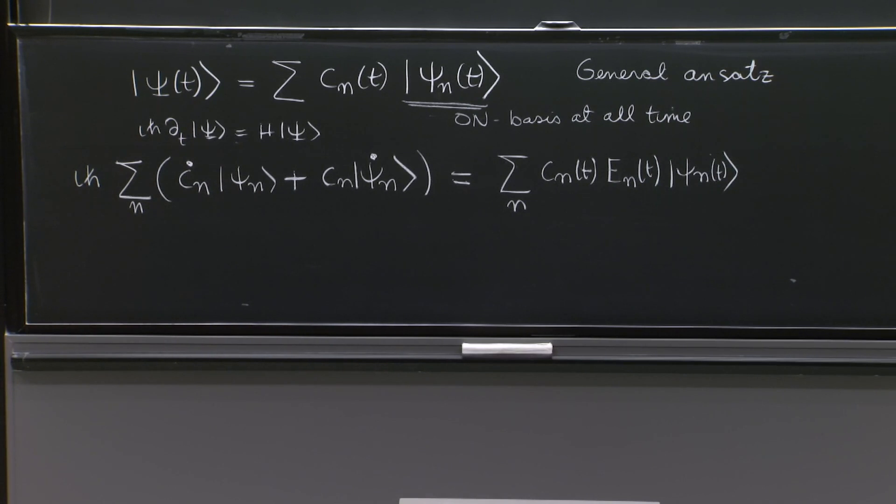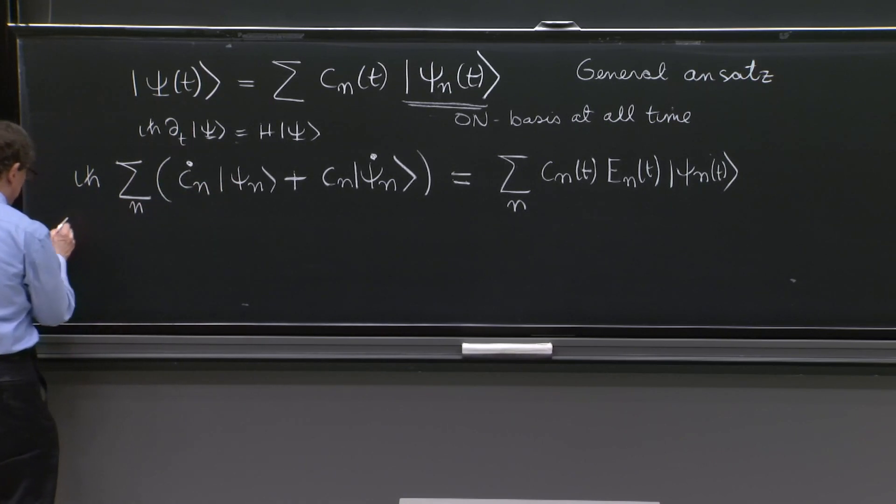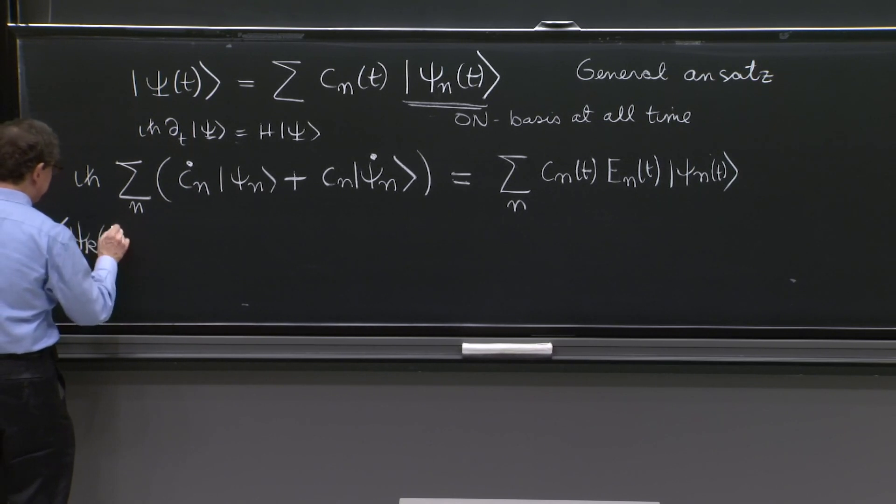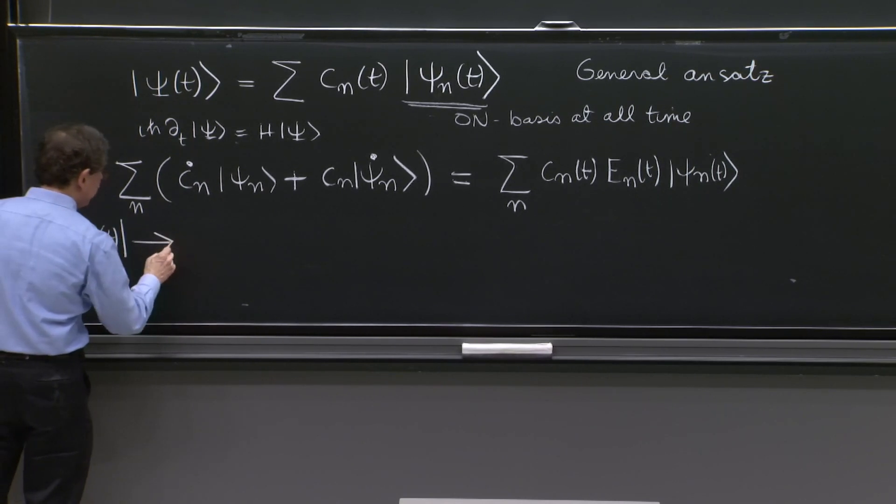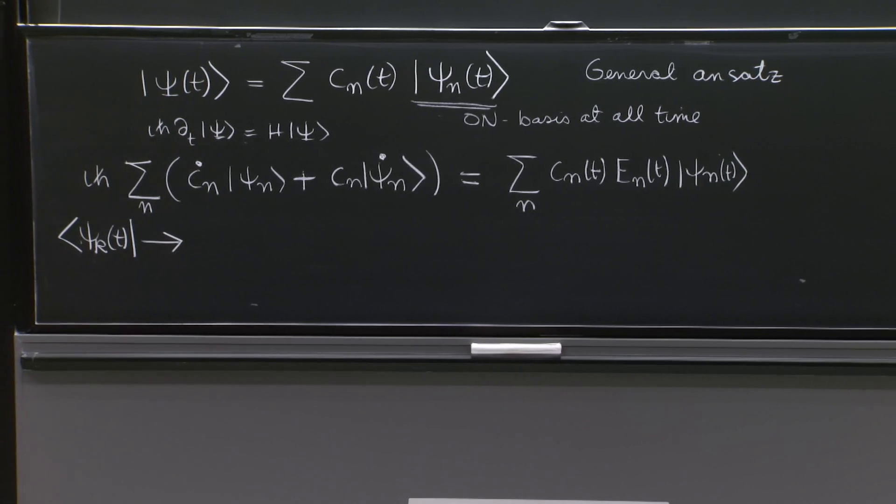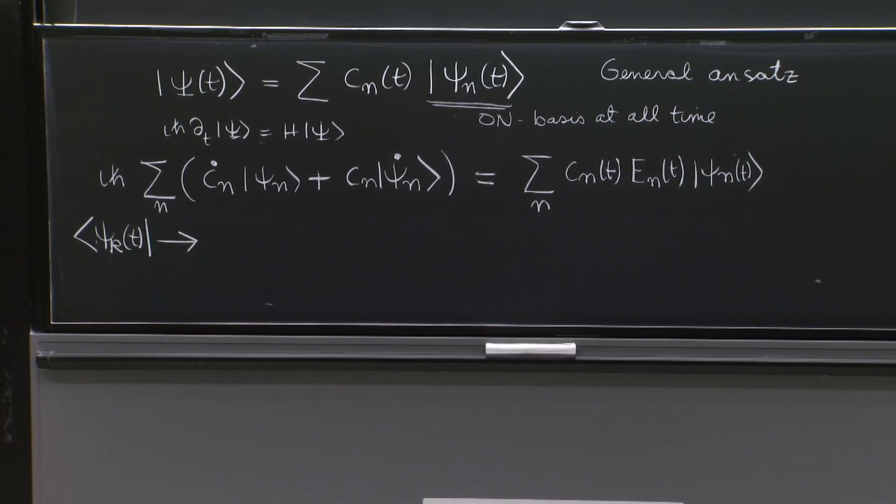Now let's see in various components what it gives you. So to see the various components, we form an overlap with a psi k of t. So we bring in a psi k of t, and what do we get?